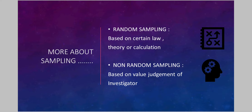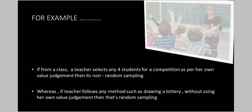Now, coming to sampling in detail. Samples can be drawn on two bases: either by applying some law, formula, or calculation, or simply by the value judgment of the investigator. If we apply a certain law, theory, or calculation to draw the sample, it is known as random sampling. Whereas if we draw samples based on value judgment alone, it is known as non-random sampling. For example, if a teacher selects four students for a competition based on her own value judgment, that is non-random sampling. Whereas if the teacher follows a method such as drawing a lottery without using her own judgment, that is random sampling.